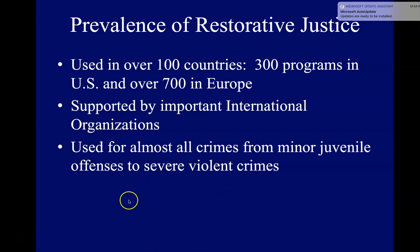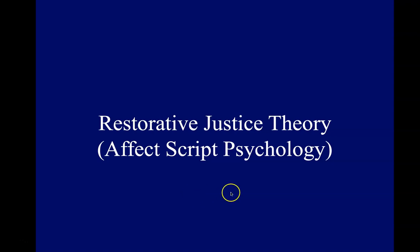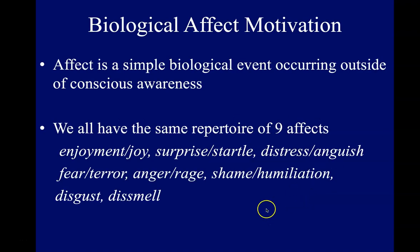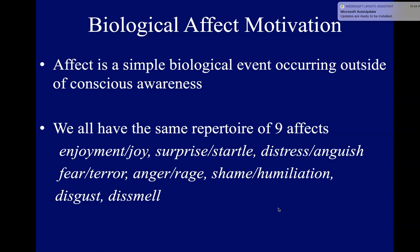Now we're going to move into the theoretical perspectives behind restorative justice. In order to understand the interpersonal dynamics of restorative justice, it's necessary to understand what affect-script psychology is — it's the best theoretical explanation of how restorative justice works. There are three parts: biological, psychological, and social. The biological part is what happens within our biological structure. We all have the same repertoire of biological affects: enjoyment/joy, surprise/startle, distress/anguish, fear or terror, anger or rage, shame/humiliation, disgust, or dismell. These nine pairs of responses happen at a biological level and are generally out of our conscious awareness.